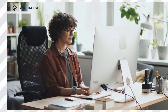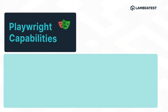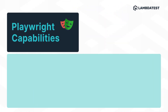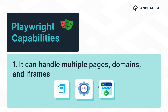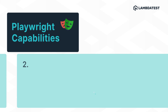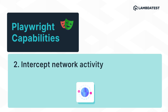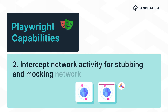Playwright is really a good tool and it has a lot of capabilities. It can handle multiple pages, multiple domains, and iframes, and also window handling concepts — alerts and everything are bundled within the API. We can also intercept the network for stopping and mocking network requests.